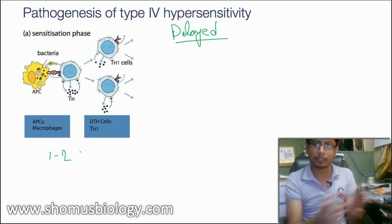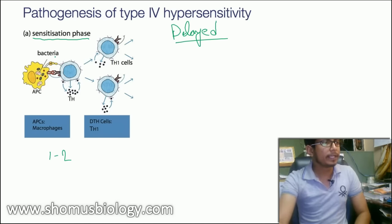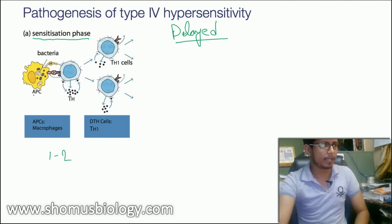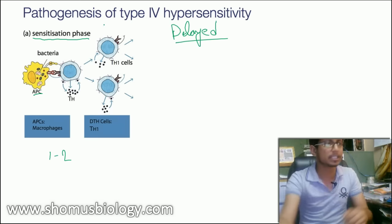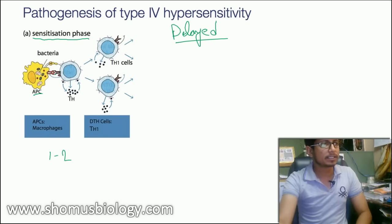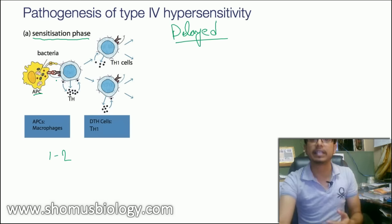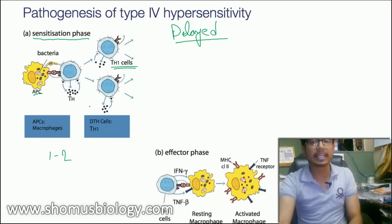The reaction starts when the body encounters the same type of allergen or antigen again within a limited time. There are two phases. The first is the sensitization phase: bacteria or antigen is engulfed by a macrophage or antigen-presenting cell, broken into fragments, and those fragments are presented to immune system cells via MHC class 2 (MHC2). T helper cells sense the antigen via their T cell receptor and become activated, producing more T helper 1 cells.